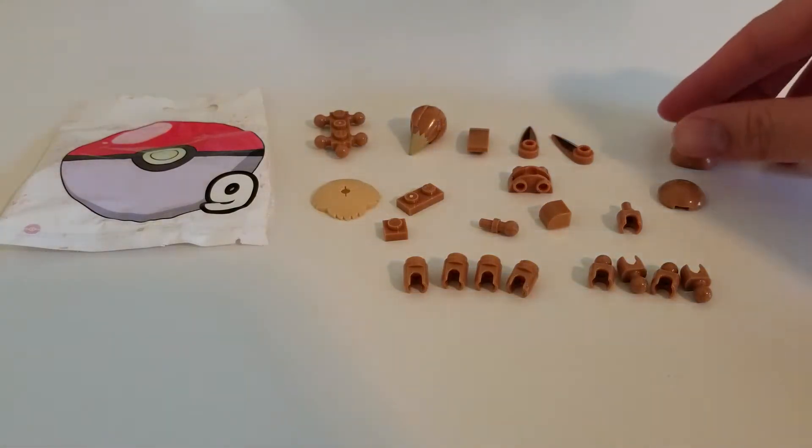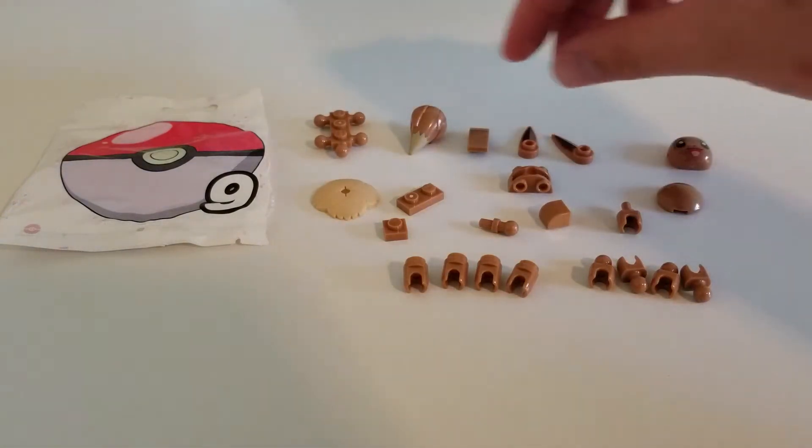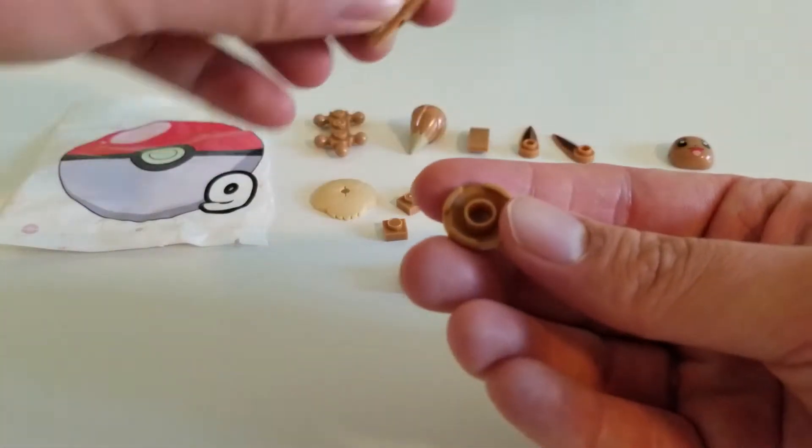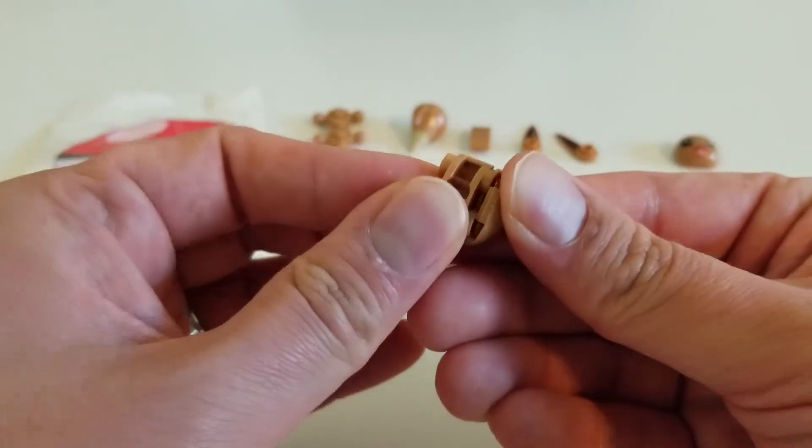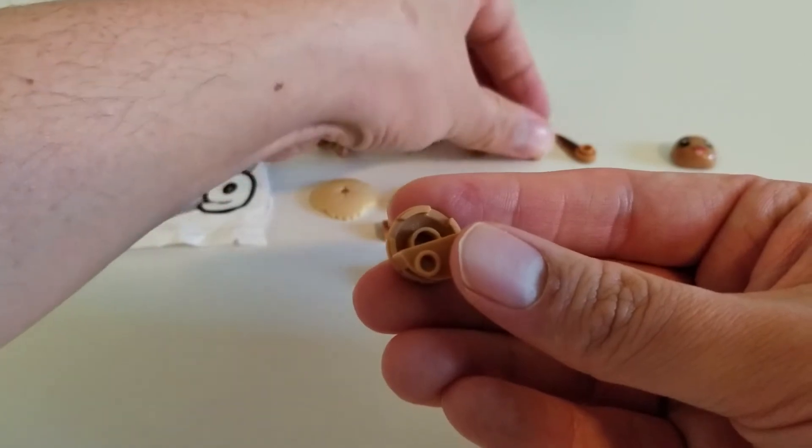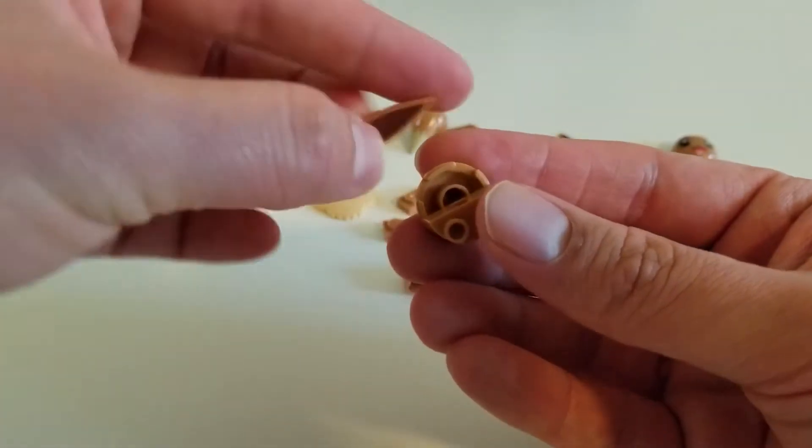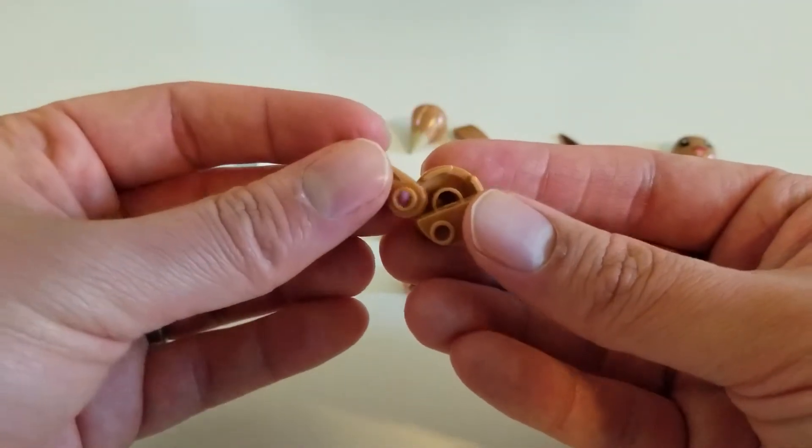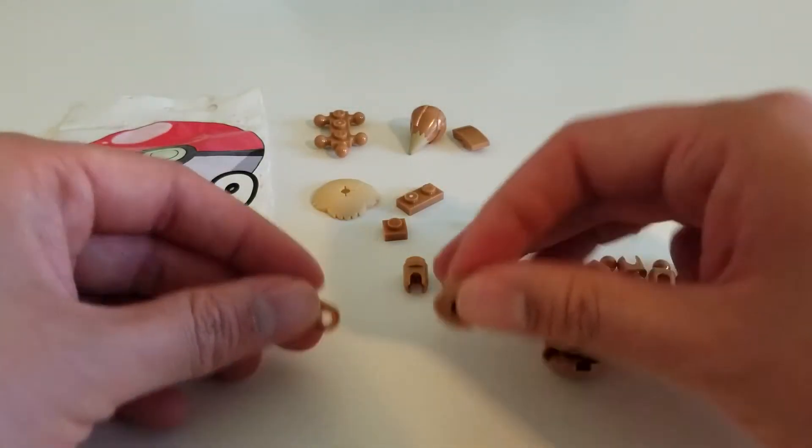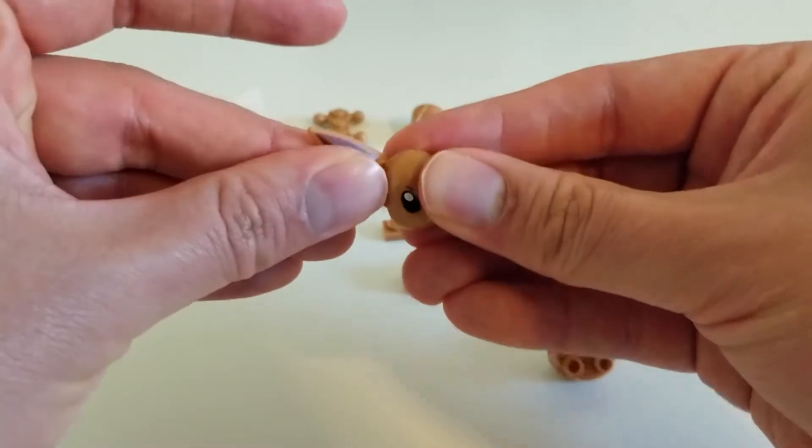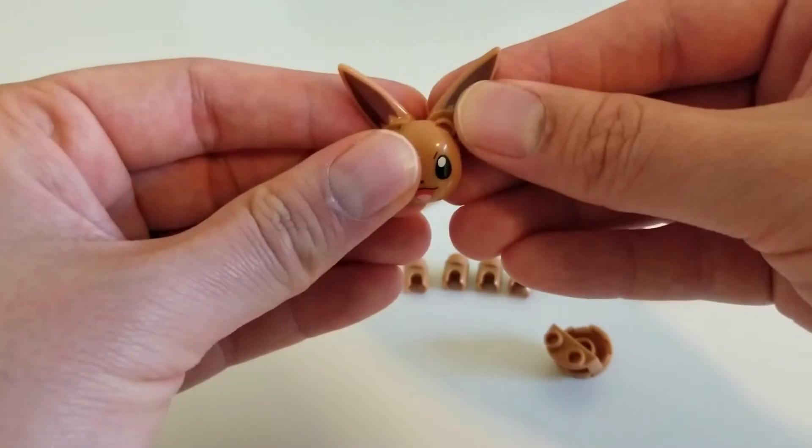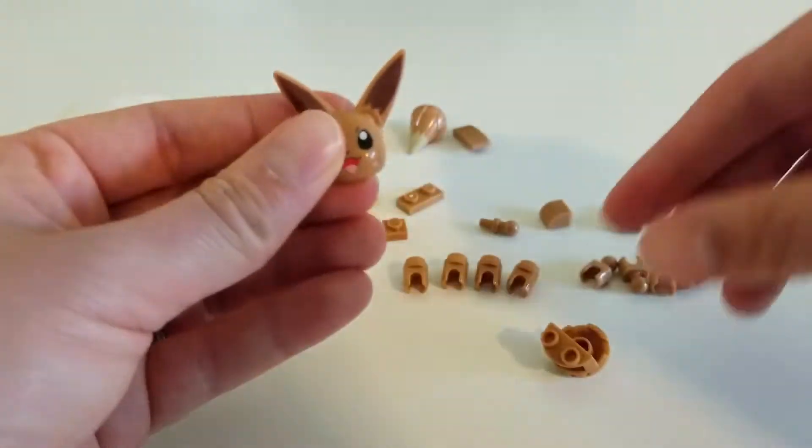Now, first we're going to go ahead and start with the head. So, let's pick out the pieces right here. We have this. We have this piece right here on the bottom. We need Eevee's ears. I think I need to attach it to this part of the face. So, let's bring out Eevee's face. There we go.